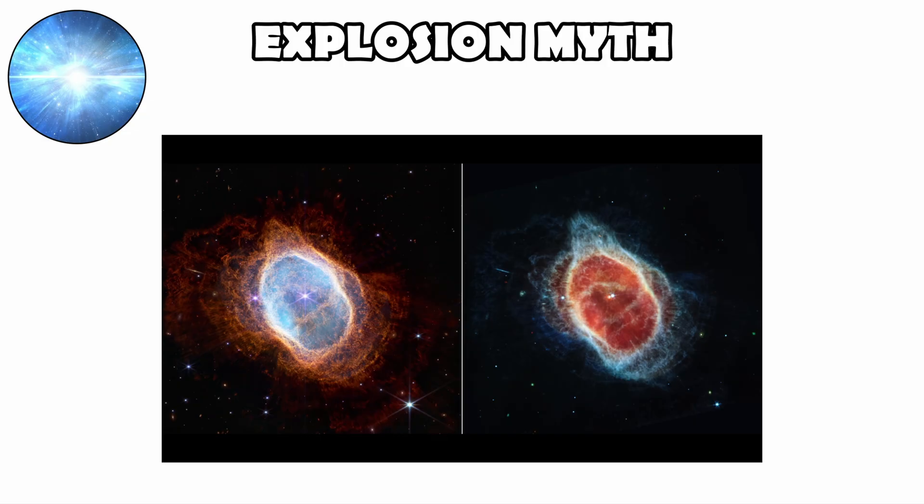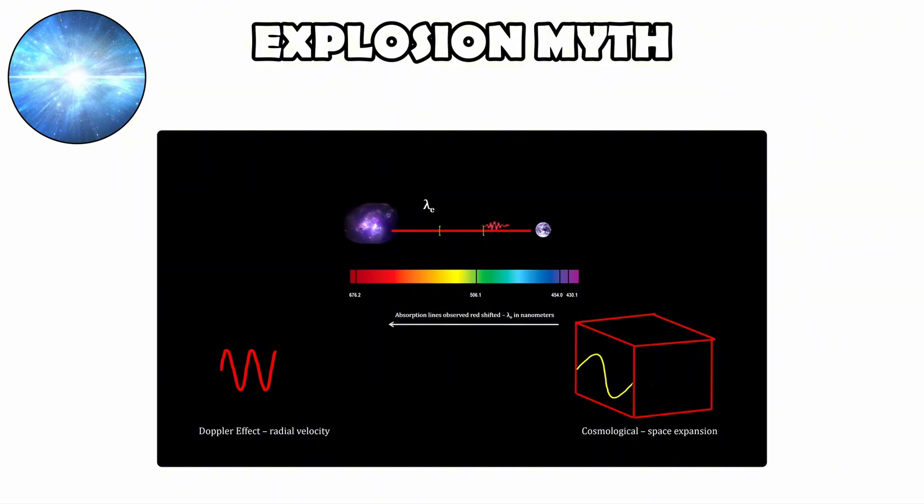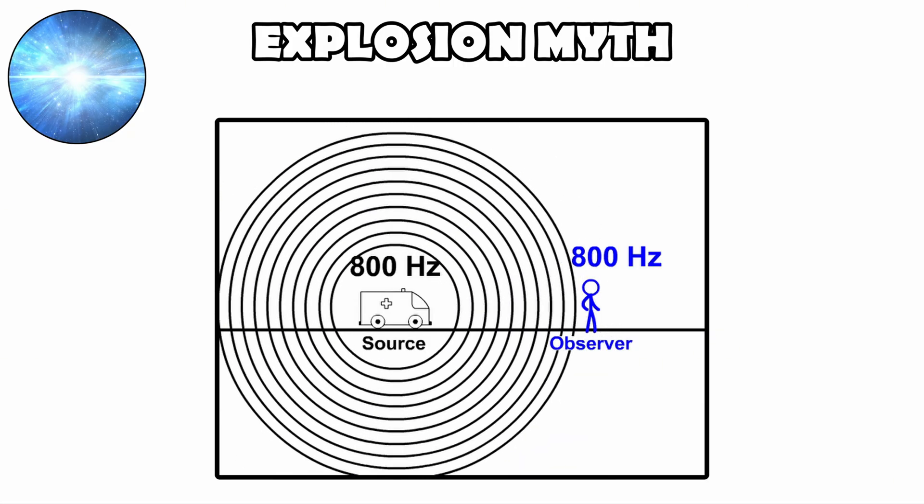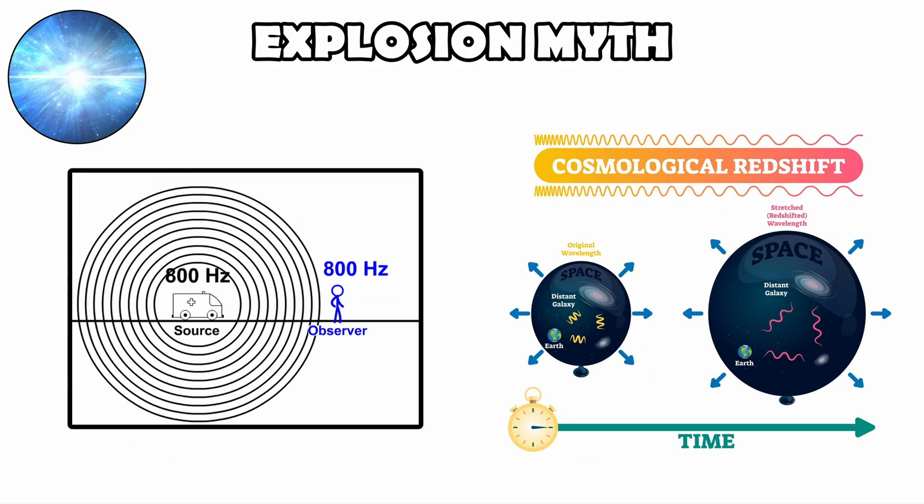Light from distant galaxies also provides evidence. As space expands, the wavelengths of photons traveling through it get stretched, creating the phenomenon known as cosmological redshift. This is not a Doppler effect from objects racing through static space, but a direct imprint of the universe's growth on light itself.